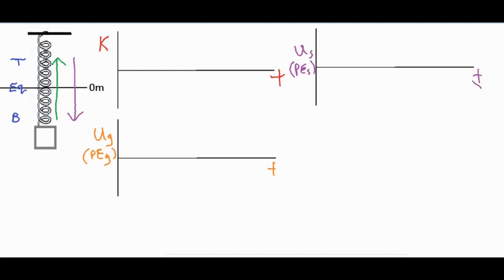Basically what's happening is if you pull a spring down it gets stretched to its maximum position and when you release it it's going to accelerate through its equilibrium position and then back to the top as the spring is compressing against that block. Then that compression is going to push it back downwards, it's going to accelerate down through the equilibrium position, and then as it's stretching away it's going to slow down and reach a velocity of zero at the bottom again, repeating that cycle over and over.